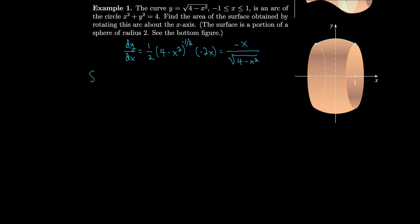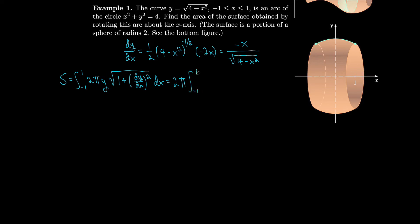To get the surface area we set up an integral. The surface area is the integral from −1 to 1 of 2π times our y value times the square root of 1 plus the derivative squared. We pull out the 2π, our y value is √(4 − x²), and then 1 plus the derivative squared is 1 plus x² over (4 − x²).